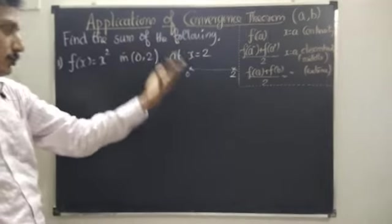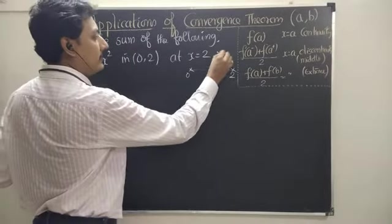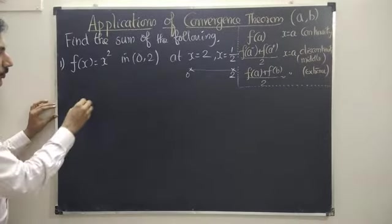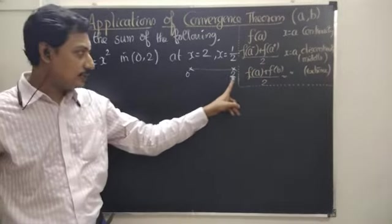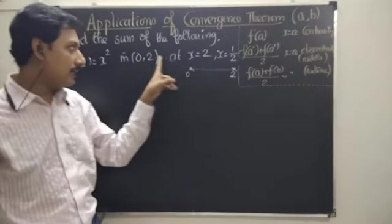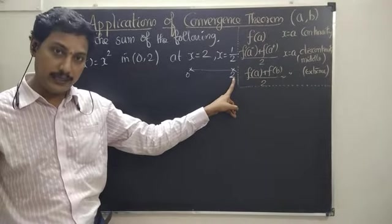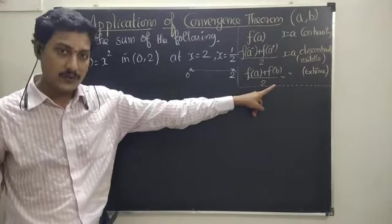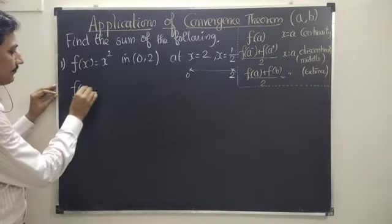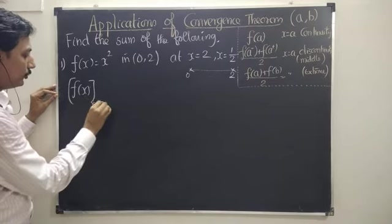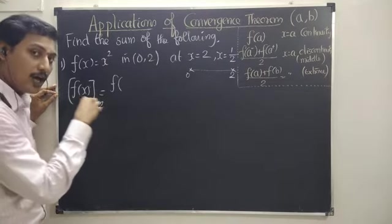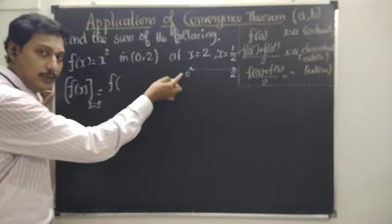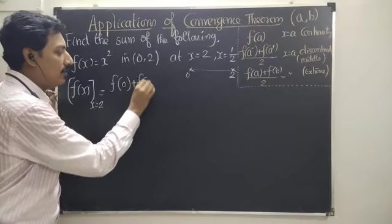At the point x equal to 2, or at the point x equal to 1/2. Now, x equal to 2 — where is it? It is in the extreme side. It is in the open interval. So, this is a point of discontinuity in the extreme side. So, by using this concept, the sum of f of x at x equal to 2 is the average of both the extreme values. The interval is 0 to 2, so take f(0) plus f(2) by 2.